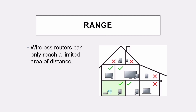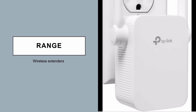Range: wireless routers can only reach a limited area. For example, in this picture you can see the router and modem can only reach certain parts of the house, but not the top floor, third floor, or the sides of the house. However, there are many ways to connect to your network from afar — we have wireless extenders. For example, if your wifi doesn't reach the back of your house but you need internet there, you need to buy a wireless extender.